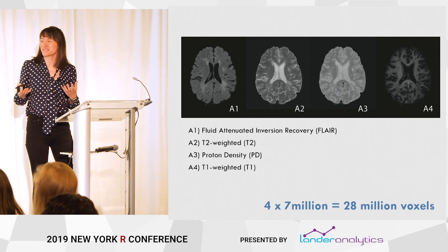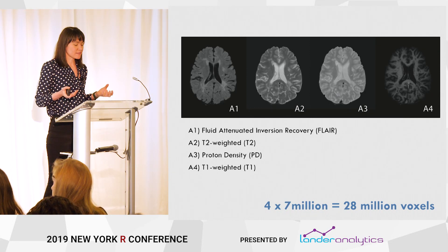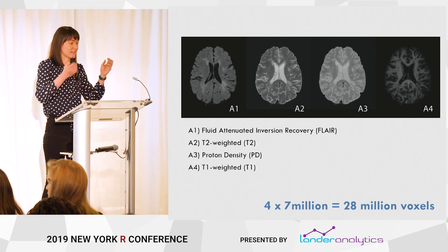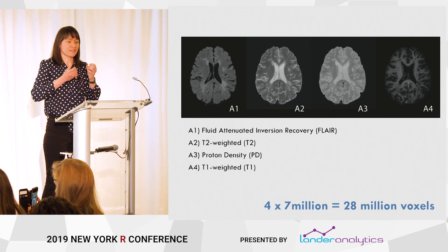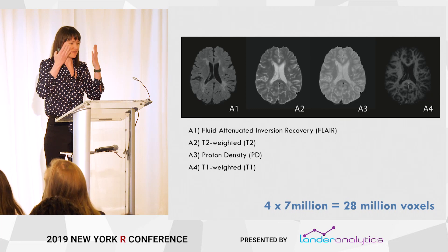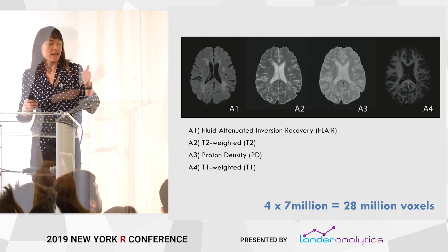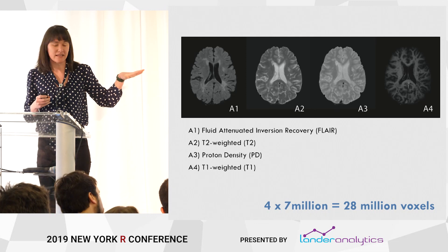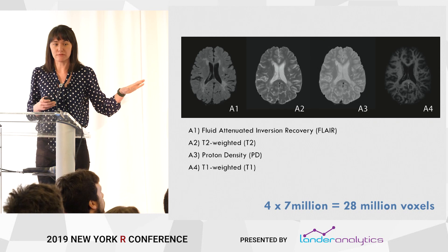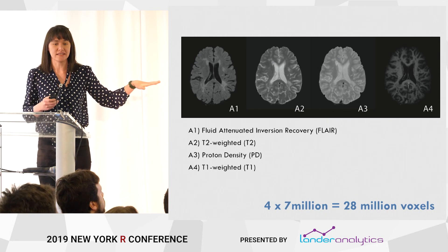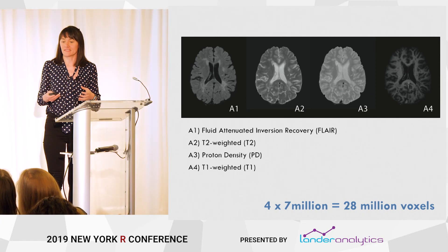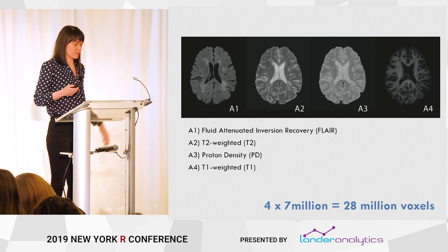When you have a structural MRI study, you don't just get one image of your brain — you get multiple images taken with different contrasts to highlight different areas. I think of it as looking at the brain with different lenses. This includes the fluid attenuated inversion recovery (FLAIR), T2 weighted, proton density, and T1 weighted images, which are commonly taken in structural MRI. Now I'm up to about 28 million voxels for just one subject.